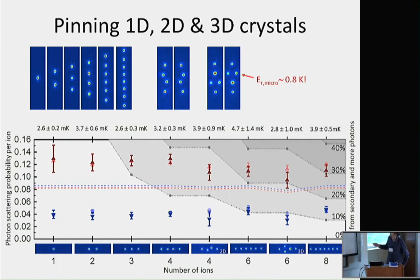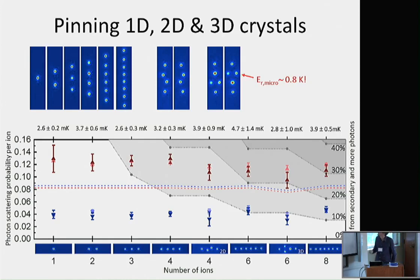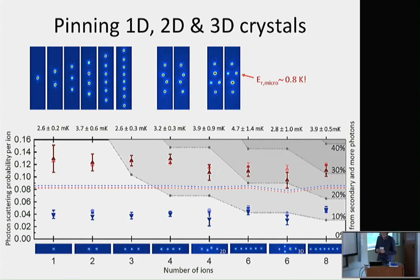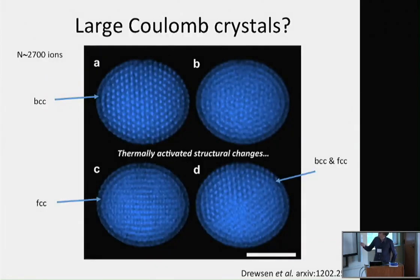One interesting thing: if you look at this ion which is off-axis, about 15 microns away from the trap axis where there is no micromotion, this ion already experiences substantial micromotion such that the average radial micromotion energy is almost one Kelvin — way higher than the lattice depth. But it's still possible to pin the ion in the axial direction, meaning the radial micromotion coupling doesn't perturb the localization mechanism. This gives hope that we can use this approach to control larger Coulomb crystals.